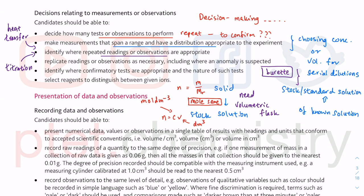Select reagents to distinguish between given ions. You need to know your table — it's only two or three pages. These are your tables of tests. Just because you are given a Paper 3 does not mean you go in not knowing the table. You have to go in prepared. If you know the reagents, you better understand the underlying reactions that happened, and therefore you can decide what kind of confirmatory tests you need to do in order to determine the nature of such ions.